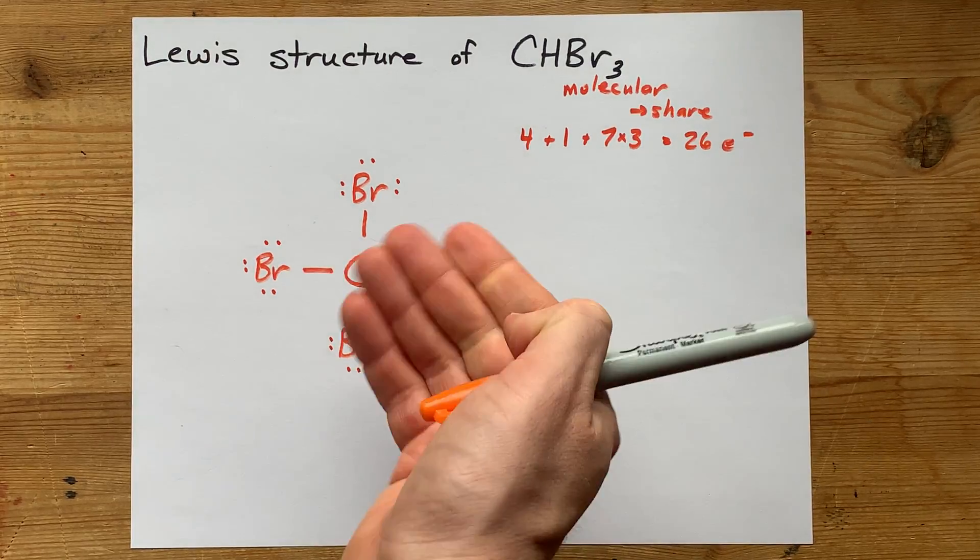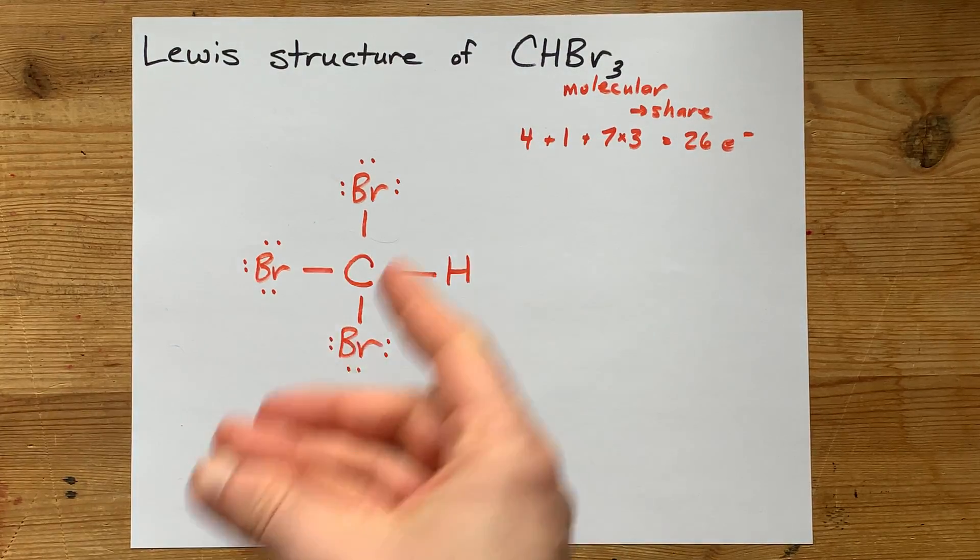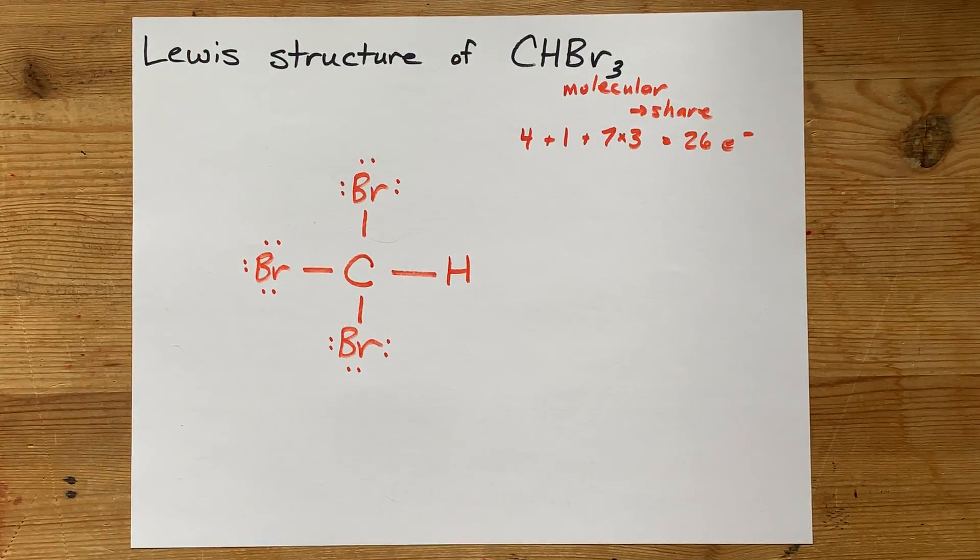That's all there is to it. I'm done. This is your complete Lewis structure for tribromomethane. Thanks for being with me and best of luck.